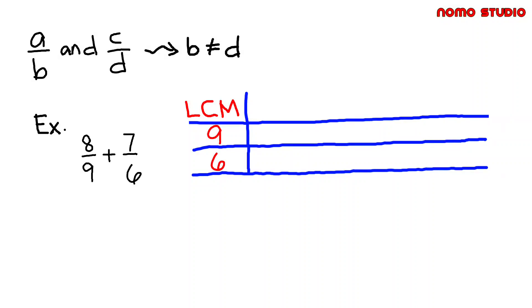The multiples of 9 are 9, 18, 27, 36, 45, and so on. And for the multiples of 6, we have 6, 12, 18, 24, 30, 36, and so on.